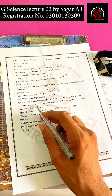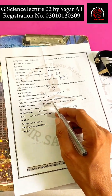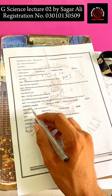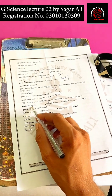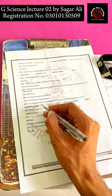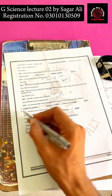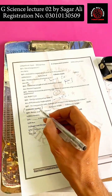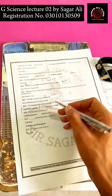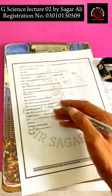In the long periodic table, the elements are arranged in the increasing order of atomic number. As you read in chemistry, elements in the periodic table are distributed according to their atomic numbers.